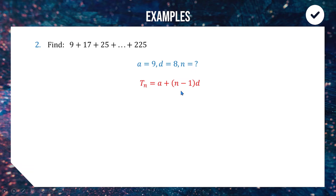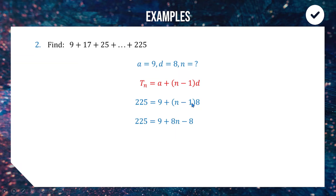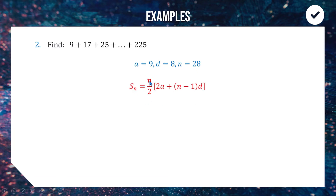Our first task is to figure out what position 225 is in the sequence. Using the nth term formula with a = 9 and d = 8: 225 = 9 + (n−1) × 8. Expanding: 9 + 8n − 8, so 8n + 1 = 225, subtract 1 and divide by 8, giving n = 28. So 225 is the 28th term. Now using the sum formula with n = 28, a = 9, d = 8, and n−1 = 27, we get a sum of 3276.